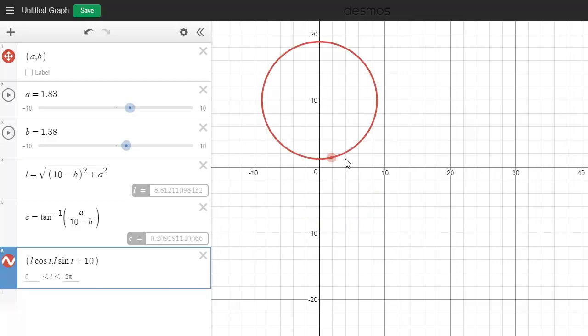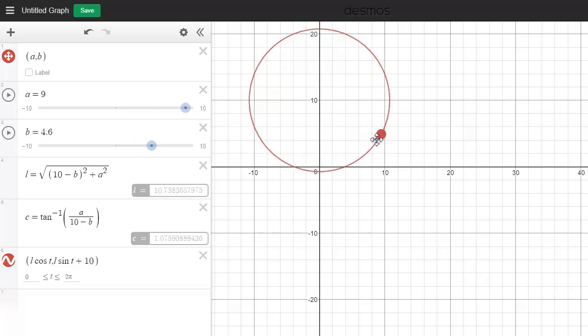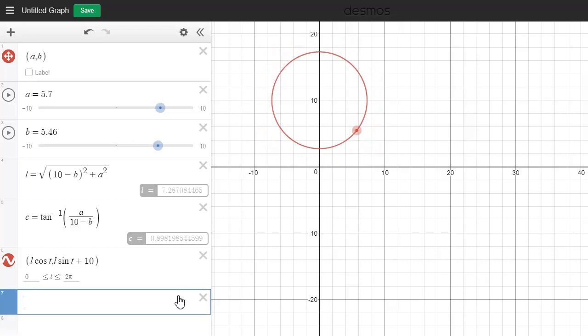So now we've moved it up. So as we vary our point, it will work out the length of the string, and then it will draw a sphere of radius L, and then it will shift it up by 10. So that will take us to here. So now, now let's add a particle. Let's get the particle to just move around in circles first.